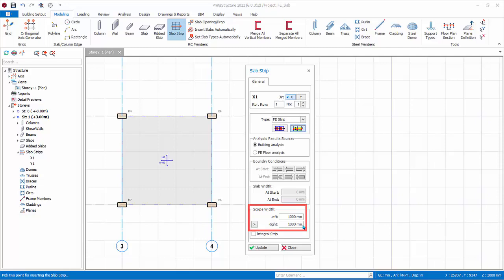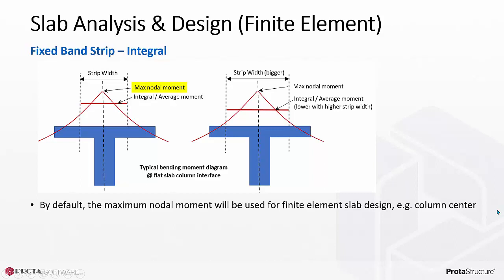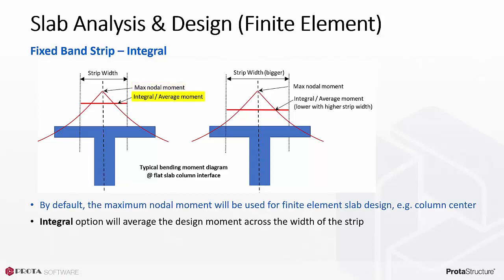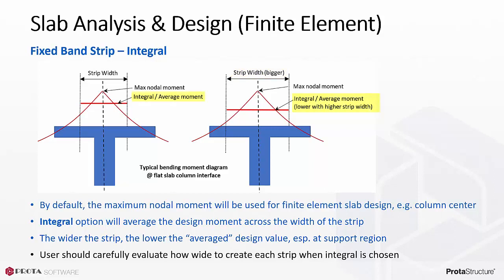The Integral option allows the design moment to be averaged. By default, the maximum nodal moment will be used for the FE Fixed Band Strip design — right at the peak at the center line of the column. The Integral option will average the design moment across the width of the strip, so the wider the strip the lower the average design value, especially at the column support region where moment changes abruptly. The user should carefully evaluate how wide to create each strip when Integral is checked, otherwise the design may be too unconservative.